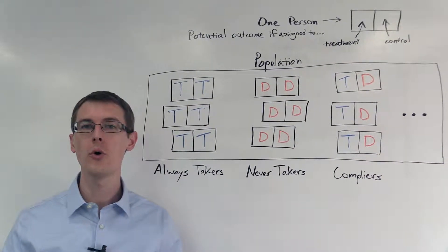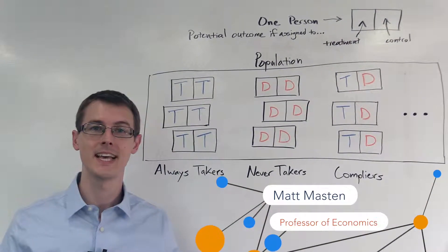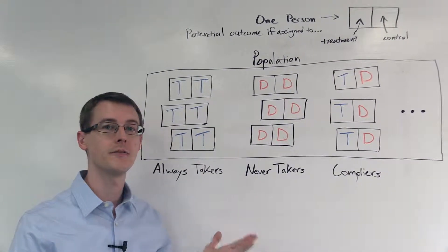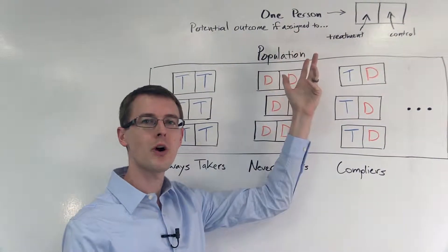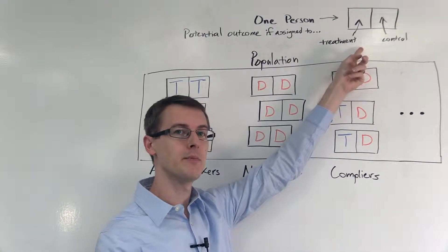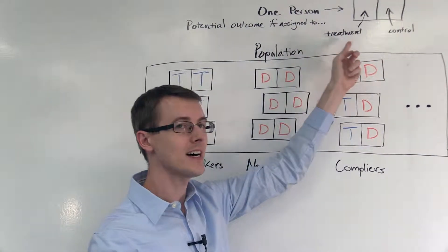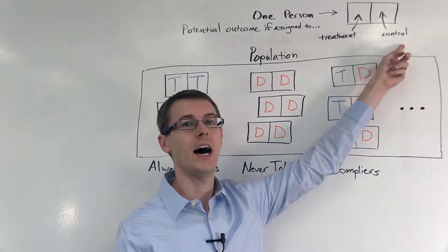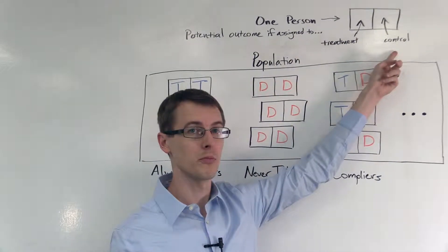So we've defined what the local average treatment effect is, but how do you actually compute it in your dataset? Well, let's see. We'll start by describing our population of units. Each person in the population is described by a box with two parts: the left side shows their potential outcome if assigned to the treatment group, and the right side shows their potential outcome if assigned to the control group.